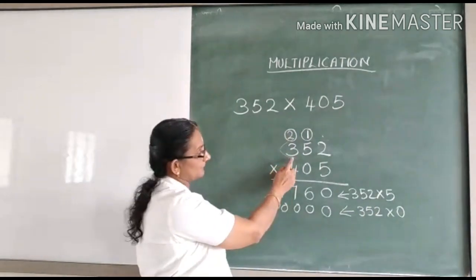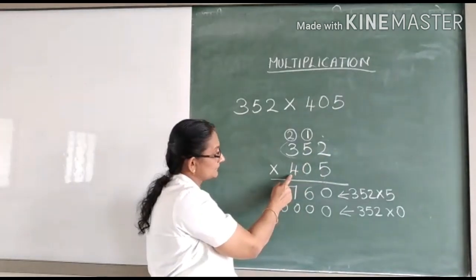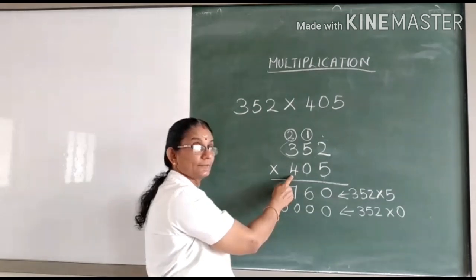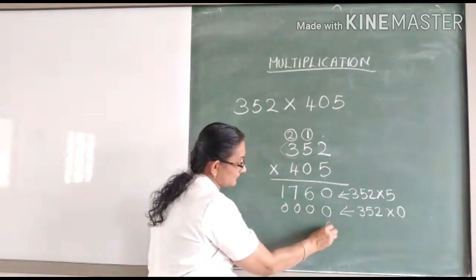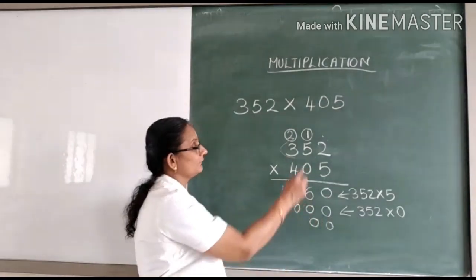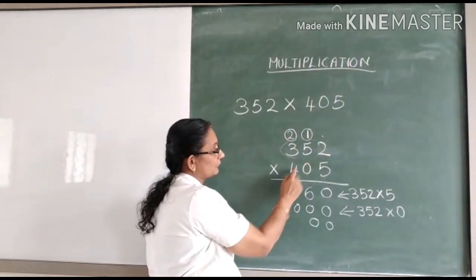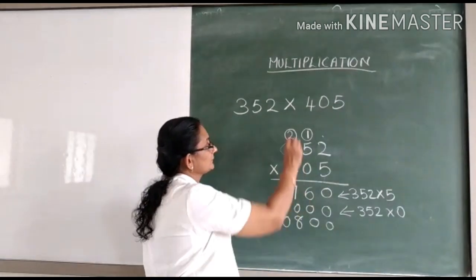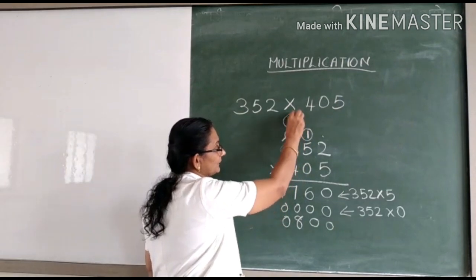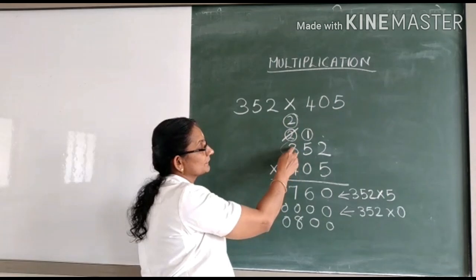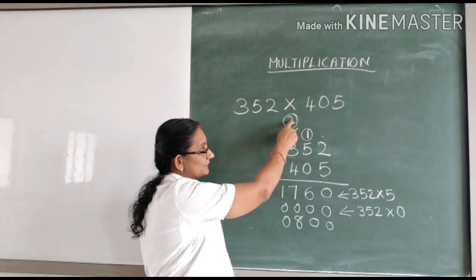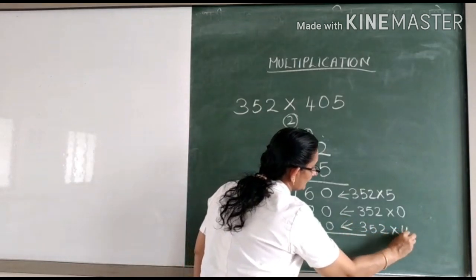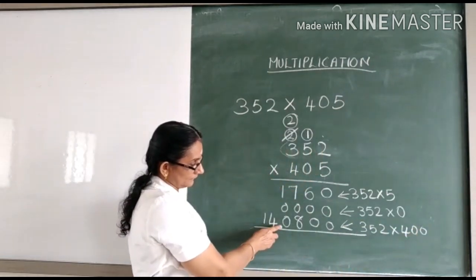The third step: multiply three hundred and fifty-two with the digit in the hundreds place. What is the digit in the hundreds place? Four. Four is in the hundreds place, so that means you are multiplying by four hundred. How many zeros do you have to write? Two zeros. Now multiply three hundred and fifty-two with four: four into two is eight, four into five is twenty — zero is written here and two is carried over. Four into three is twelve, and twelve plus two is fourteen. So three hundred and fifty-two into four hundred is equal to one lakh forty thousand.